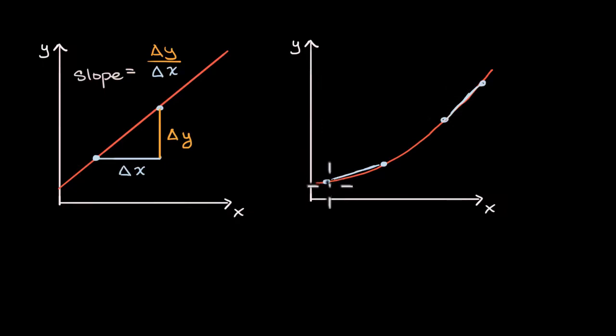So even when we take the slopes between two points on the line, the secant lines, you can see that those slopes are changing. But what if we wanted to ask ourselves an even more interesting question?